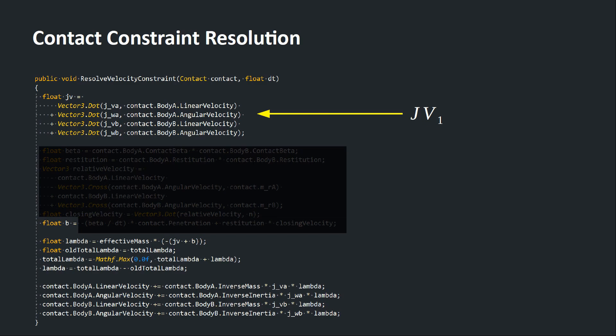First, plug in the velocity to multiply it with the Jacobian matrix, and then use this to compute the lambda, which is our impulse, and then finally use the impulse to compute the change in velocity in order to satisfy the velocity constraint.